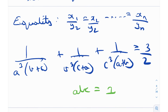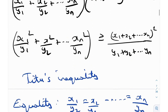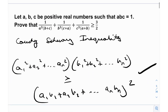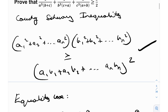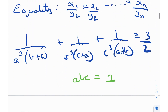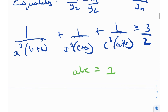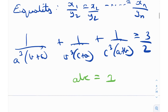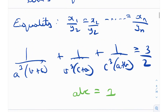A general thing about Cauchy-Schwarz is: whenever we have squares, it's good to apply Cauchy-Schwarz. In this question we have cubes, so it's not as natural to apply Cauchy-Schwarz or Tito's — it's hidden. But we can transform this into something quadratic.